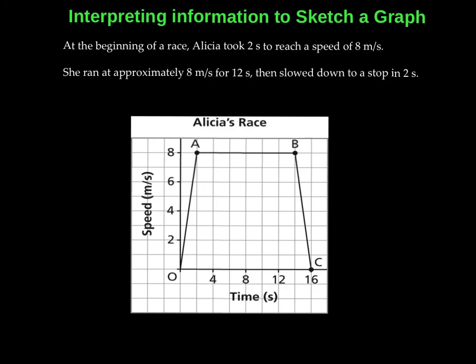Alright, so this is Alicia's graph. It takes her 2 seconds to reach a speed of 8 meters per second. So right here, that's 2 seconds. It takes her 2 seconds to get to 8 meters per second. Then what she does is she runs at 8 meters per second. So she continues to run at 8 meters per second. There's no change in this speed. Her speed is constant along this time frame here.